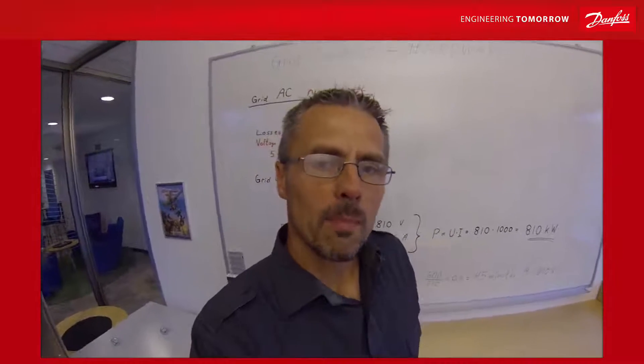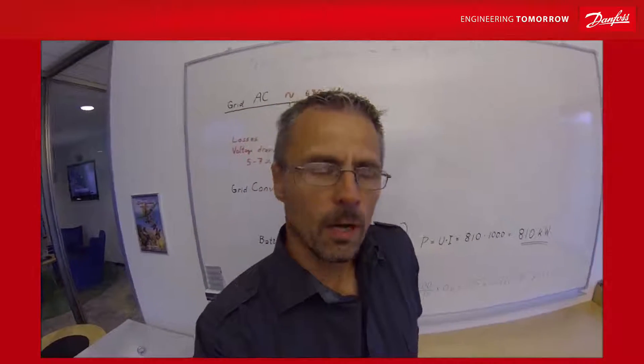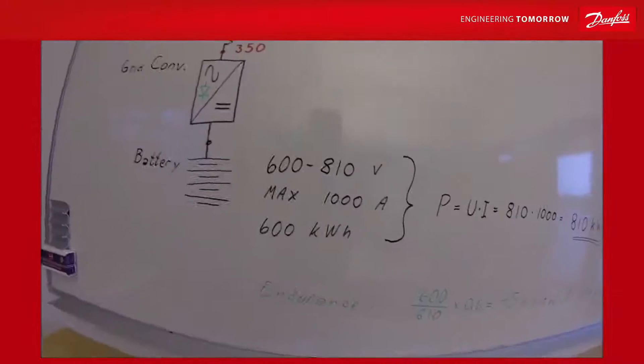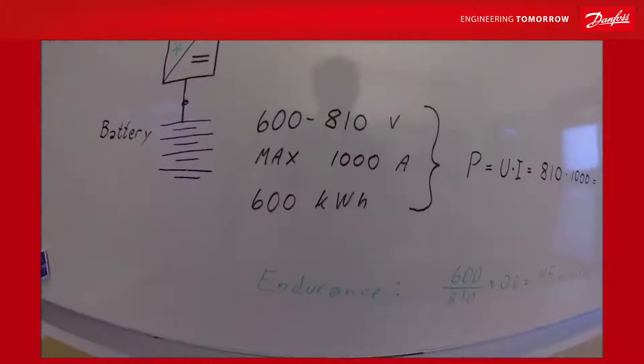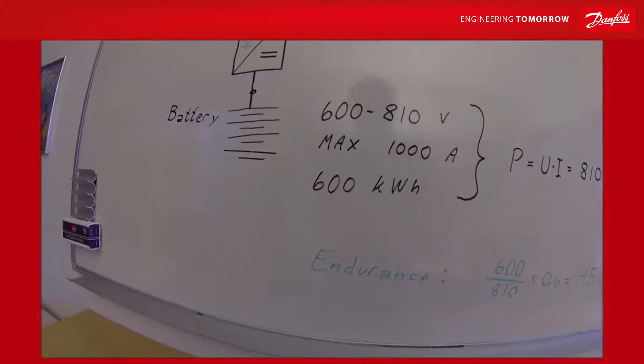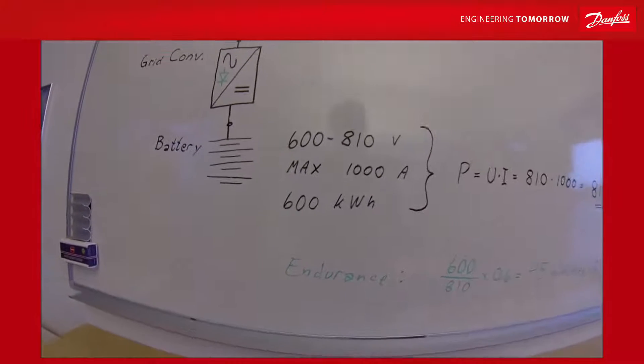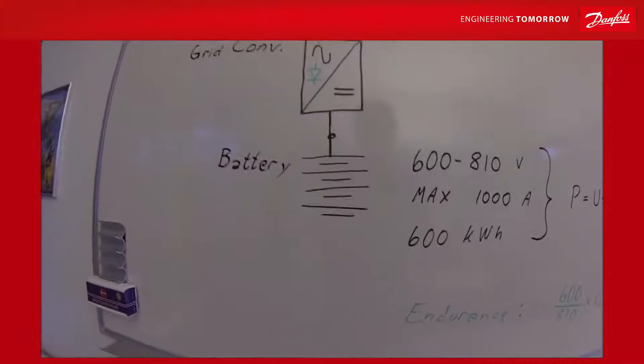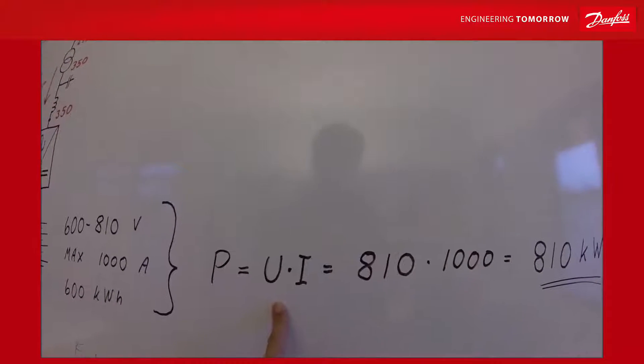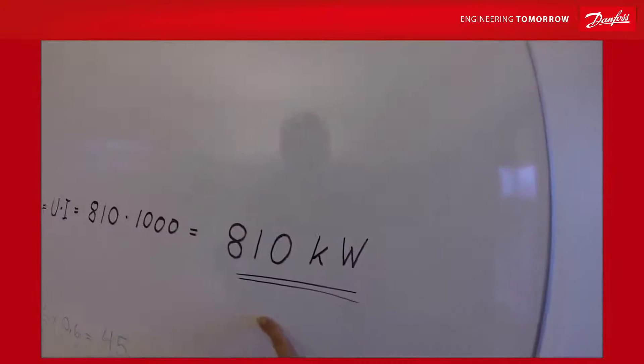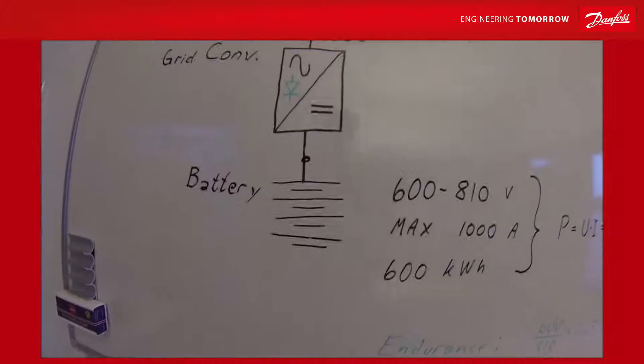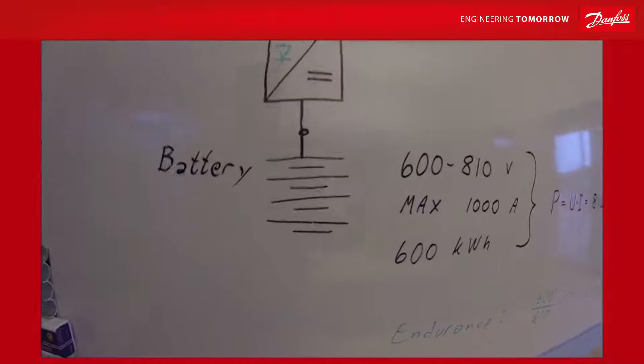We're now going to take a look at the dimensioning of the drive and the transformer, how many kilovolt amperes and how big drive it should be. It can deliver 1000 ampere both for the discharge and the charge, and total capacity is about 600 kilowatt hours. How many kilowatts will that be? It will be the power will be voltage multiplied with the current, and you will deliver 810 kilowatts with this battery. So it's typically a battery for a thruster on a DP class ship.